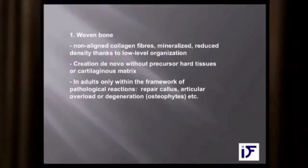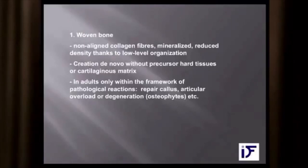The first bone type I want to mention is woven bone. Woven bone develops usually in fracture sites and also in extraction sites. However, woven bone is not a stable version of bone — it develops, it matures, and it is resorbed.